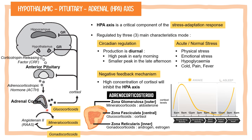The ACTH segment of POMC stimulates the adrenal cortex to produce cortisol. In the brain, cortisol acts on two types of receptors: the mineralocorticoid receptor and the glucocorticoid receptor, or GR. Cortisol is able to inhibit the secretion of CRH through glucocorticoid receptor complexes in the hypothalamus and pituitary gland in a negative feedback cycle, thereby down-regulating cortisol production. High levels of cortisol will therefore inhibit the HPA axis.